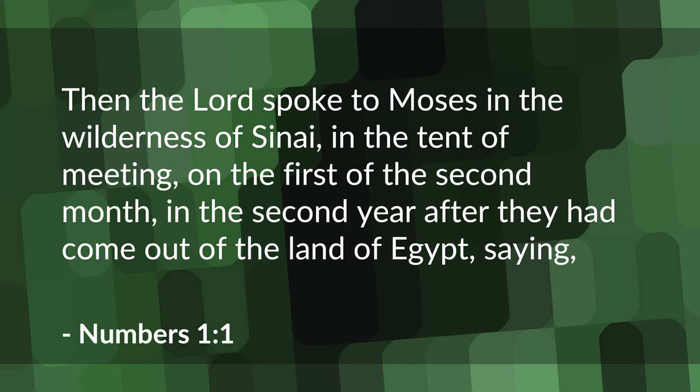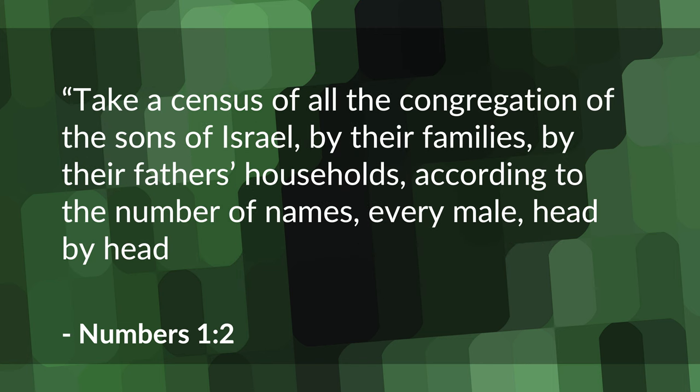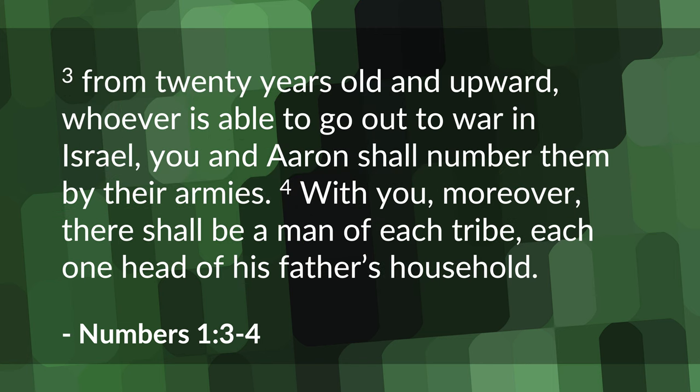Chapter one, verses one to four says: 'Then the Lord spoke to Moses in the wilderness of Sinai, in the tent of meeting, on the first of the second month, in the second year after they had come out of the land of Egypt, saying: Take a census of all the congregation of the sons of Israel, by their families, by their fathers' households, according to the number of names, every male head by head. From 20 years old and upward, whoever is able to go out to war in Israel, you and Aaron shall number them by their armies.'